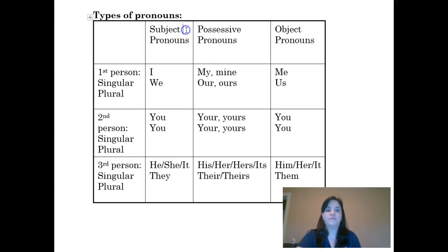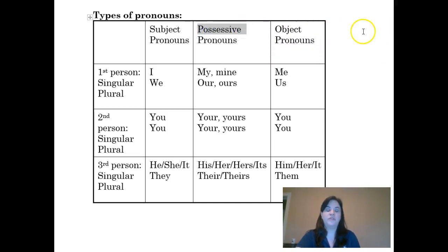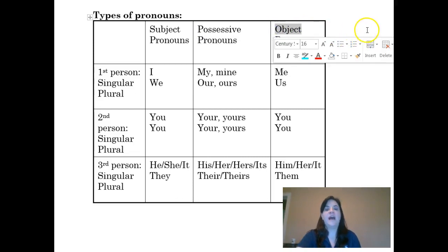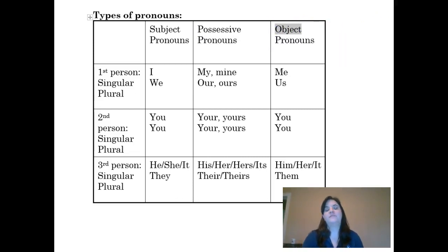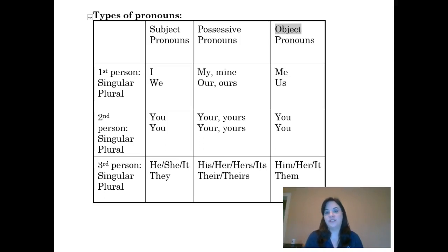For each of these types of person, we also have three types of pronouns. We have subject pronouns, which function as the subject of the sentence. We have possessive pronouns, which show ownership. And then we have object pronouns, which come after verbs and function as the object of a verb. They cannot function as a subject in a sentence.